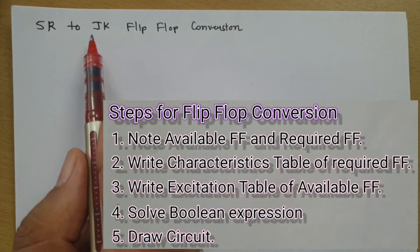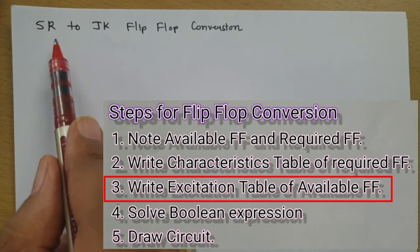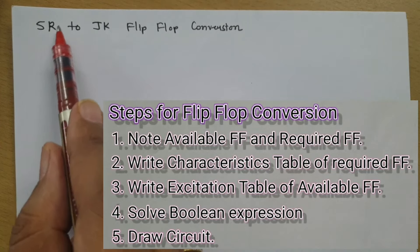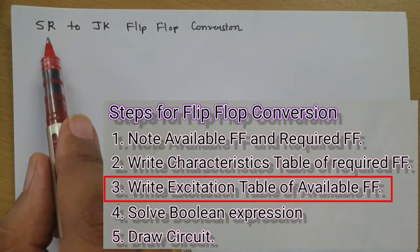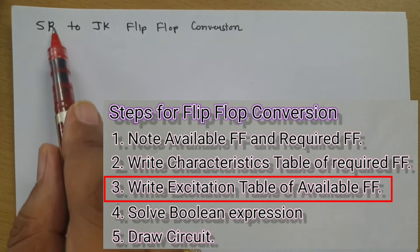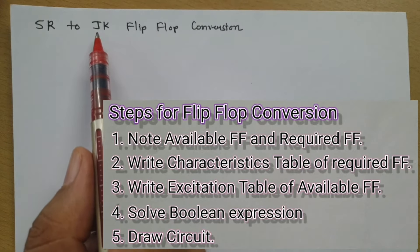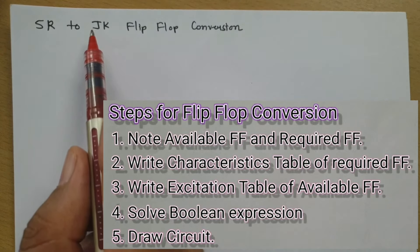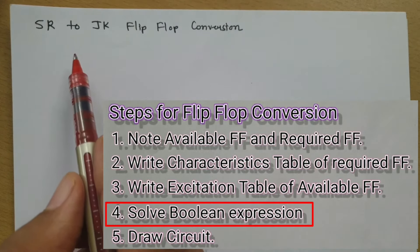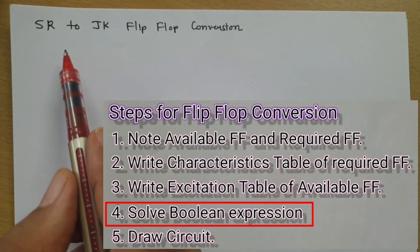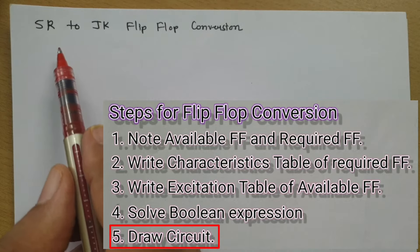The third step is to write the excitation table for the available flip-flop, which is the SR flip-flop. Once you write the excitation table, we need to place the values of this excitation table into the characteristic table of the JK flip-flop. After that, we need to find the Boolean expression by solving the K-map. That is our fourth step. And once we have the Boolean expression, we can draw the circuit of this flip-flop conversion.